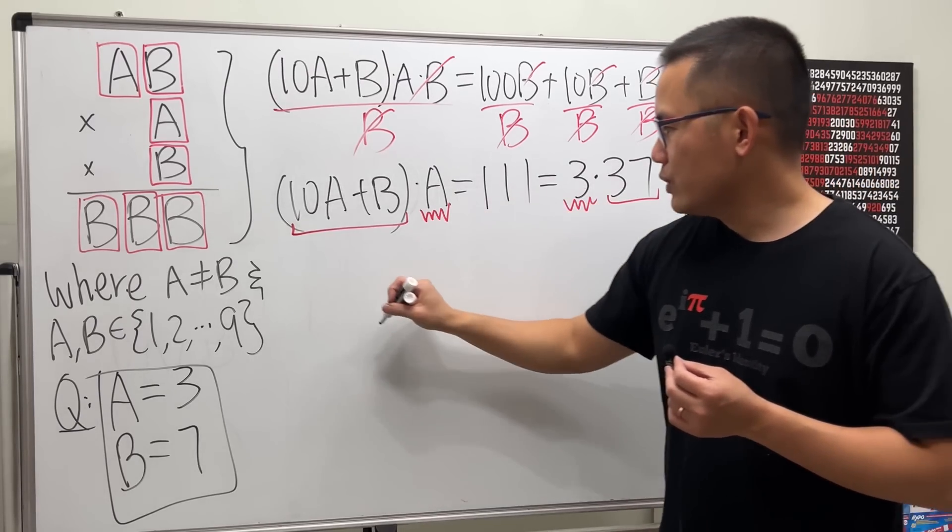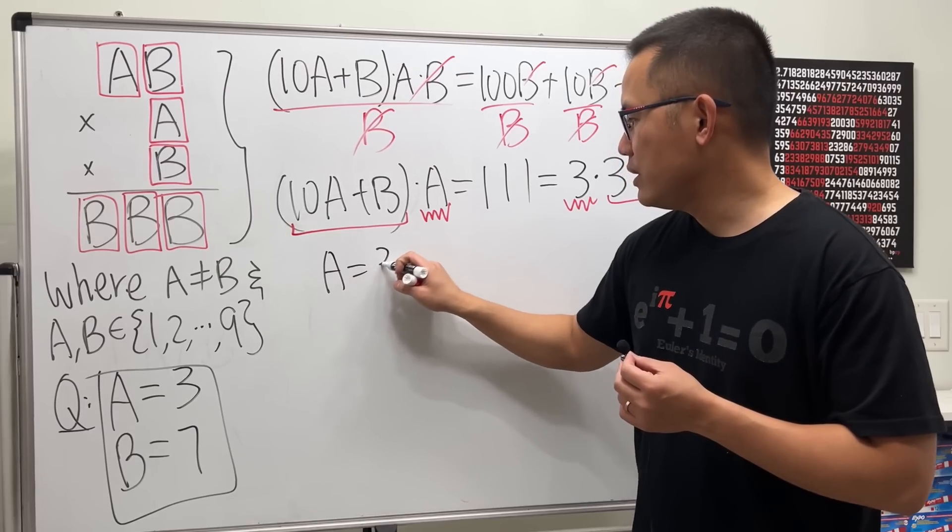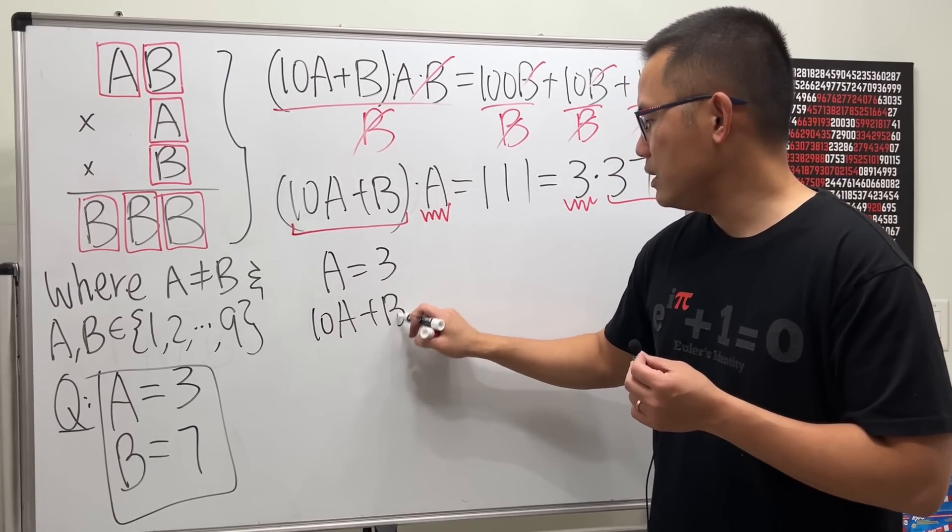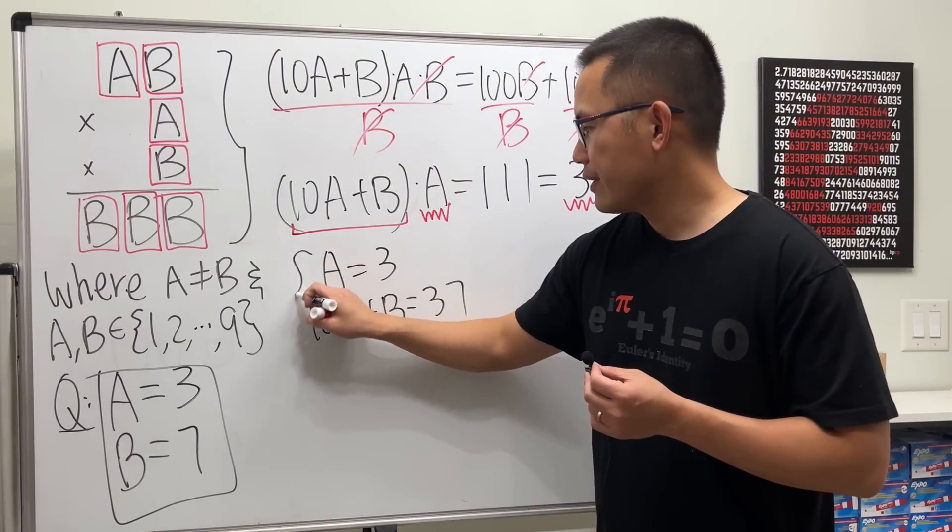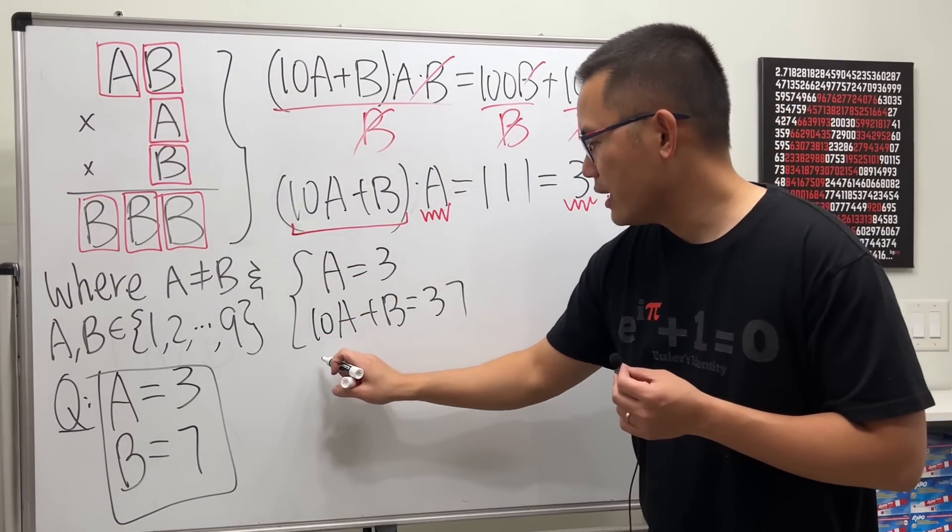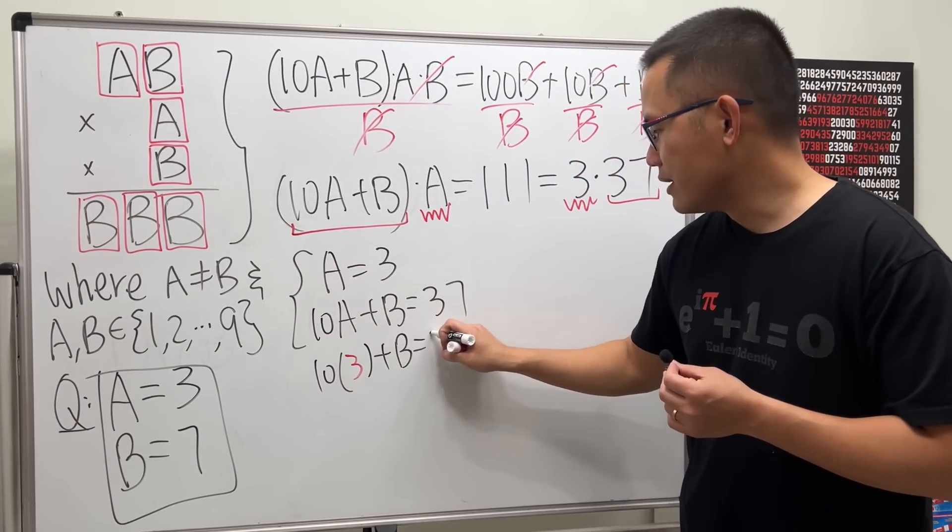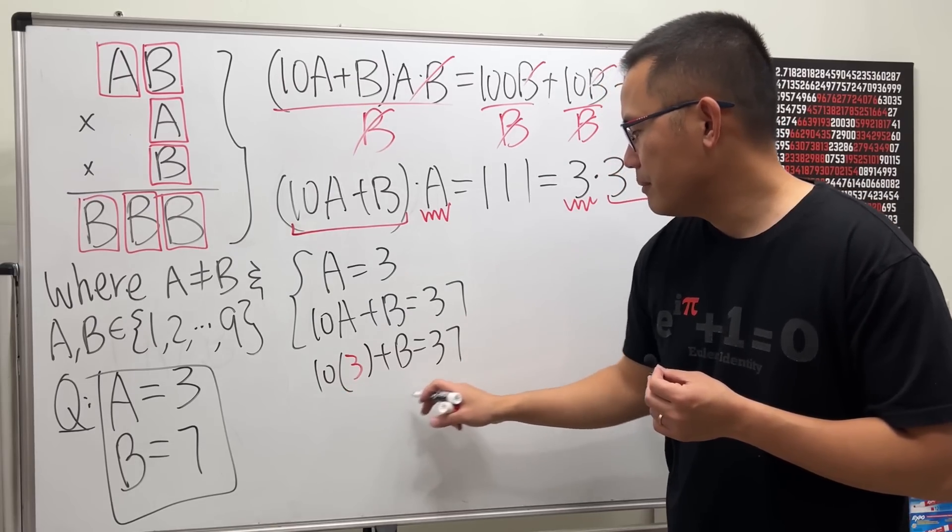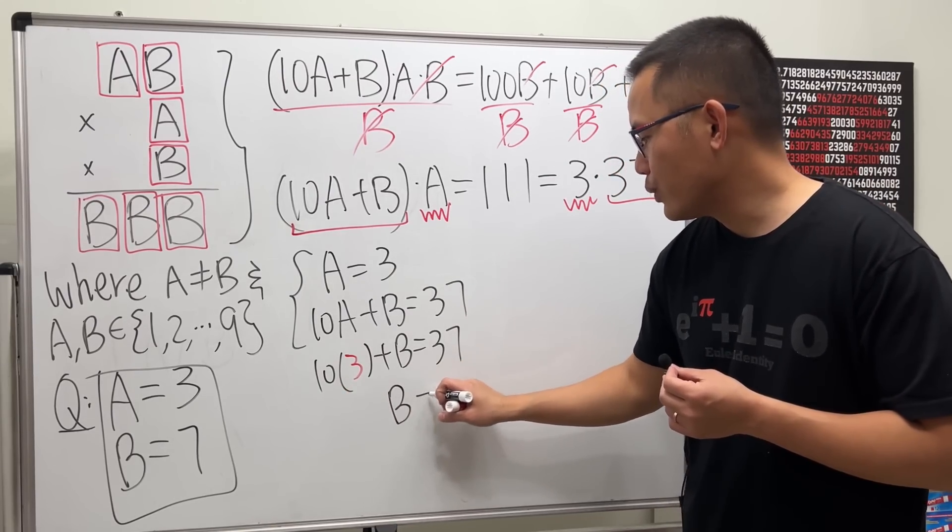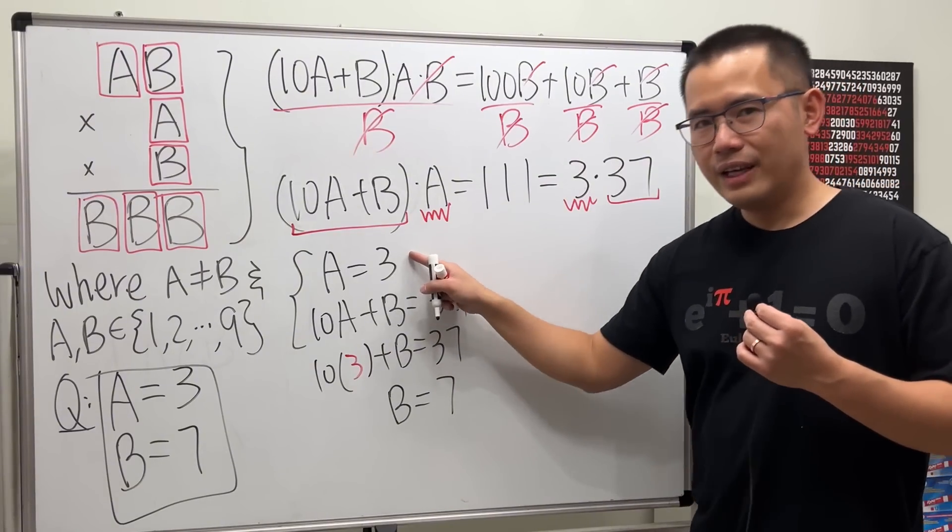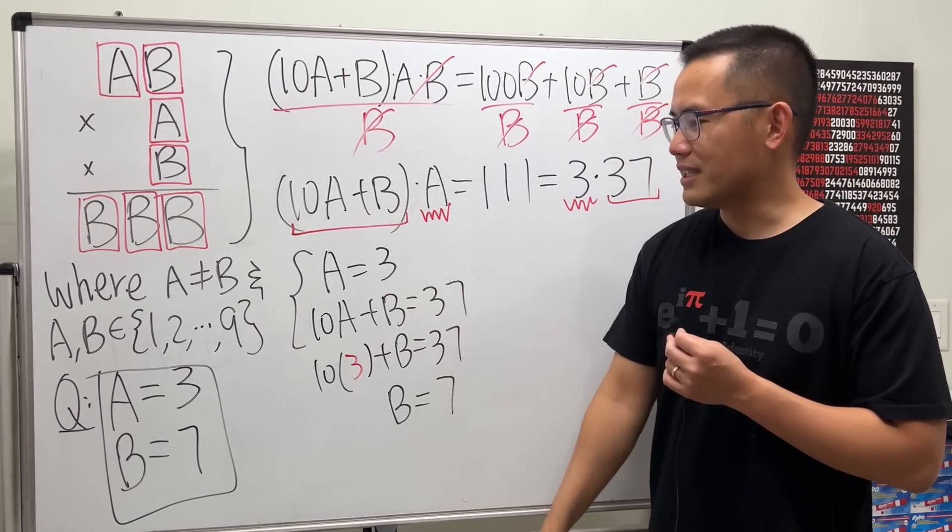So that means we have A equal to 3, and then 10A + B equals 37. Plug 3 right here, we get 10 times 3 plus B equals 37. So that's 30. Subtract 30 from both sides, B is equal to 7. There we have it: A is equal to 3, B is equal to 7, just like that.